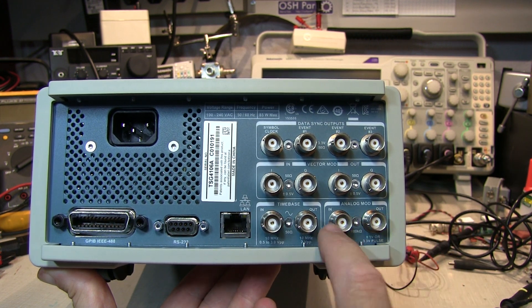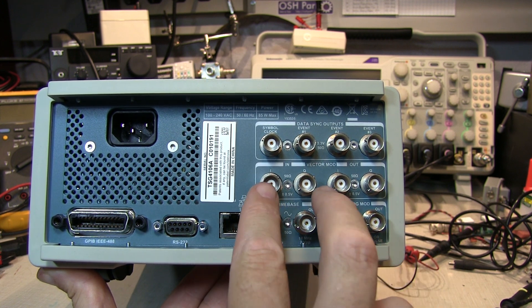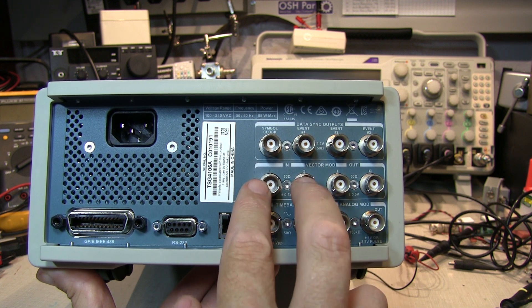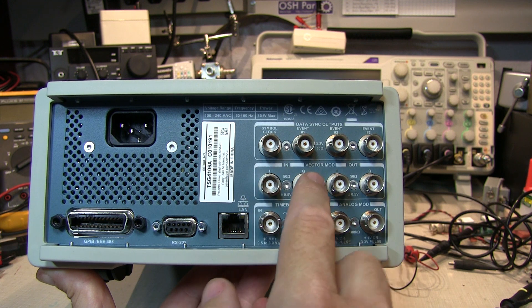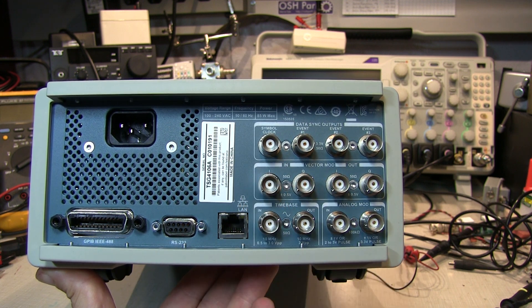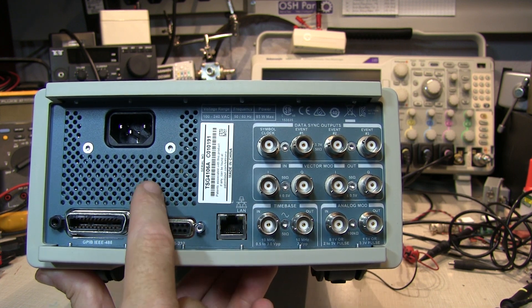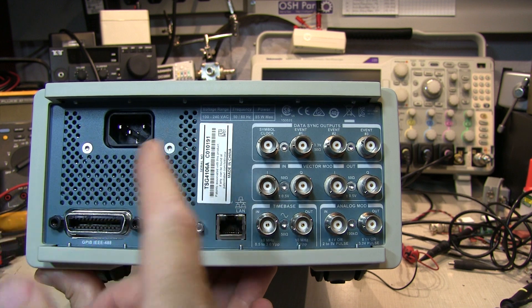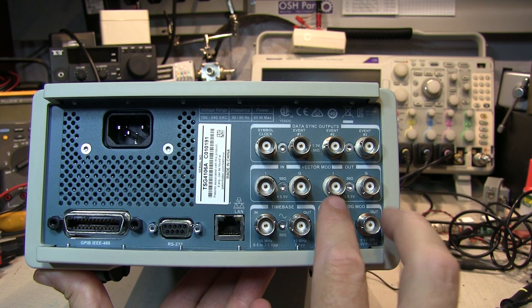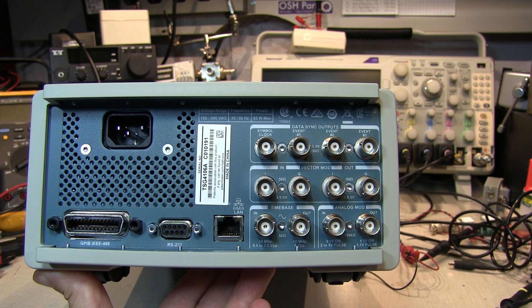Analog modulation in and out. And then this also features vector modulation. So the baseband quadrature I and Q inputs can be put into here to quadrature modulate the output. 200 megahertz of bandwidth or so on each of the I and Q which gives you about 400 megahertz of RF modulation bandwidth with that option.